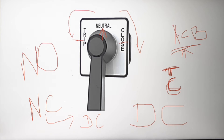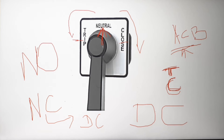Similarly, if I rotate the knob towards the trip position, initially that contact is normally open. When I rotate to the trip position it becomes normally closed, allowing the DC supply — about one second or less — to energize the trip coil. After operating, the knob automatically returns to the default neutral position due to a spring mechanism inside the TNC switch.